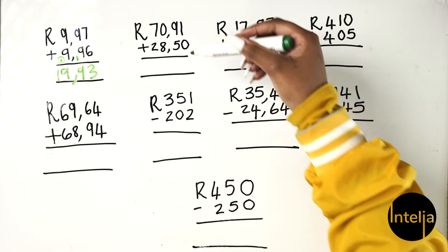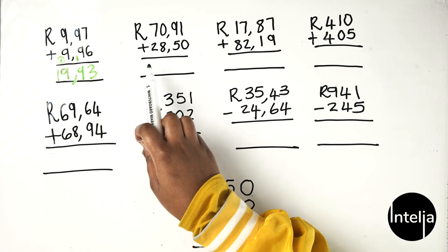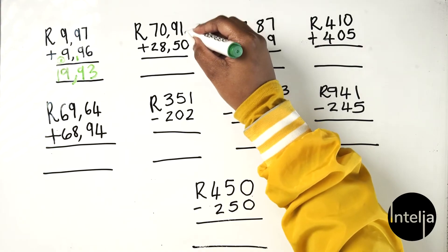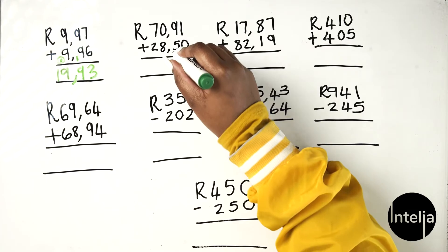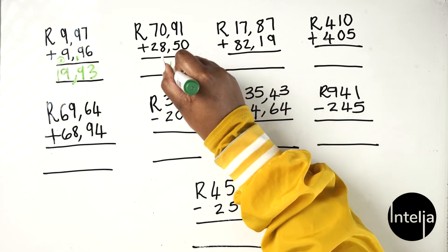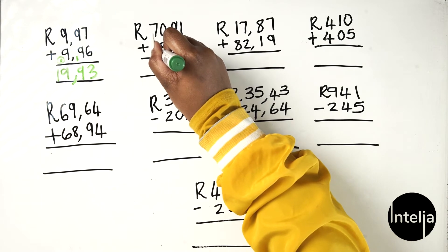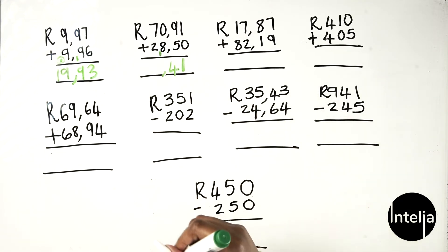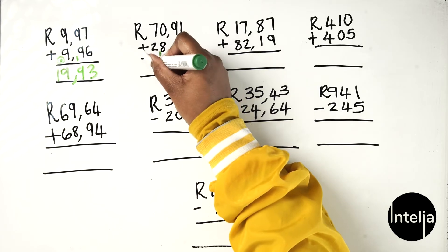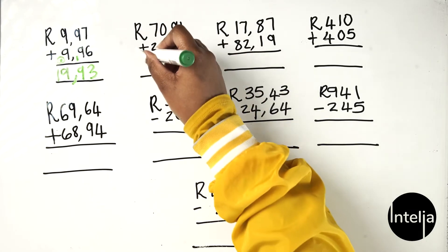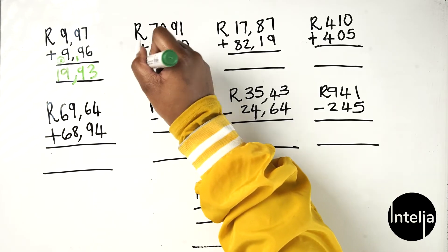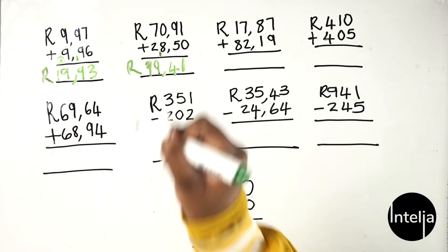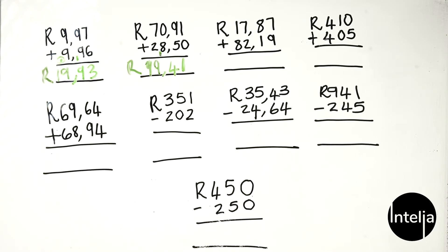Moving on to the second example: 70 rand 91 cents plus 28 rands 50 cents. Just like before — 1 plus 0 gives you 1, and 9 plus 5 gives you 14 — write down your 4 and carry the 1. Don't forget your comma. 0 plus 8 plus 1 gives you 9 — write down your 9. Then 7 plus 2 gives you 9. Don't forget your currency — rands. Your answer is 99 rand 41 cents.